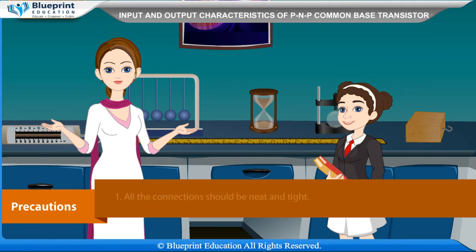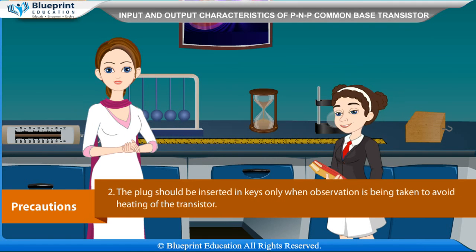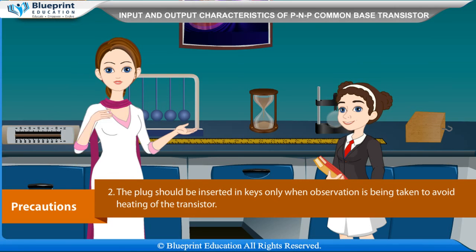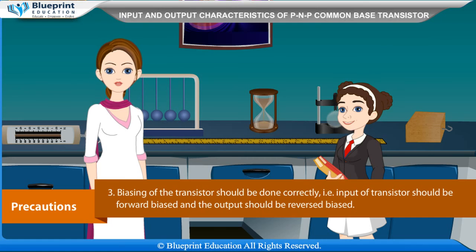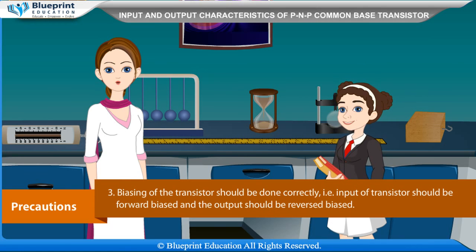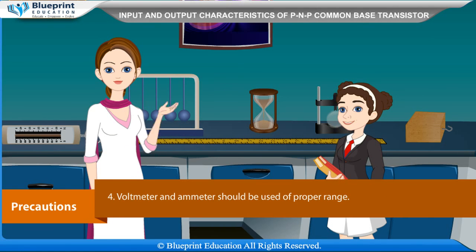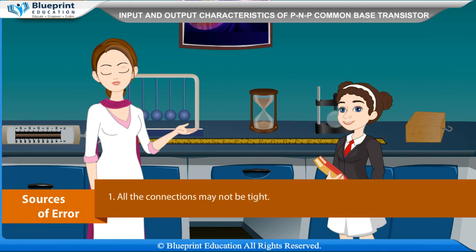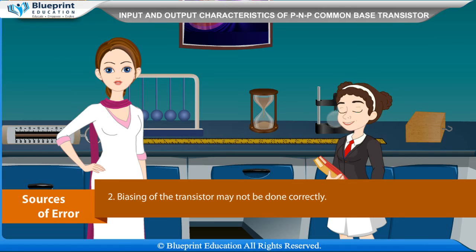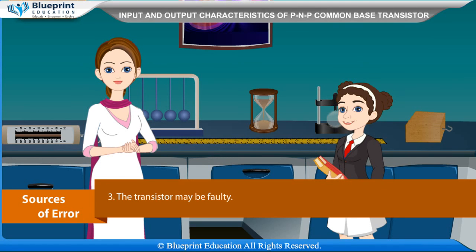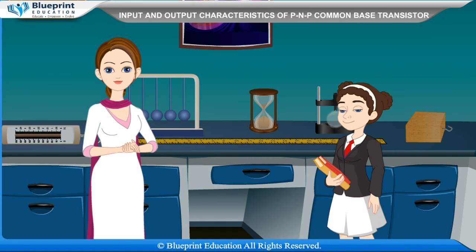Precautions: All connections should be neat and tight. The plug should be inserted in keys only when an observation is being taken, to avoid heating of the transistor. The transistor should be biased correctly — the input should be forward biased and the output should be reverse biased. Voltmeters and ammeters should be used of proper range. Sources of error: connections may not be tight, biasing may be incorrect, or the transistor may be faulty. Thank you for this knowledgeable experiment.